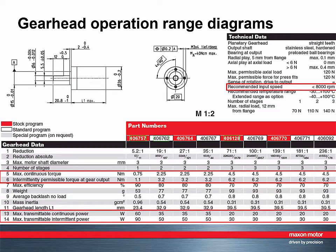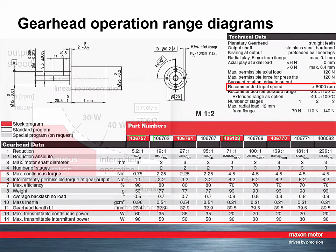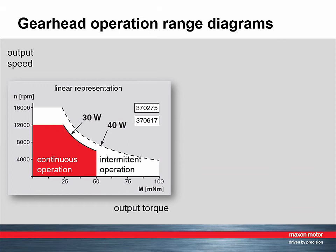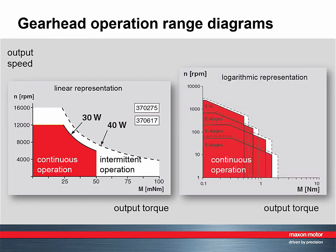The corresponding values are given for some of the Maxon gearheads. Putting all this together, we can draw an operating range diagram for a gearhead, which looks similar to the one shown here. If all the reduction values of a gearhead type are to be represented, a diagram with a logarithmic axis is more appropriate — that's what you find on the Maxon GPX series.